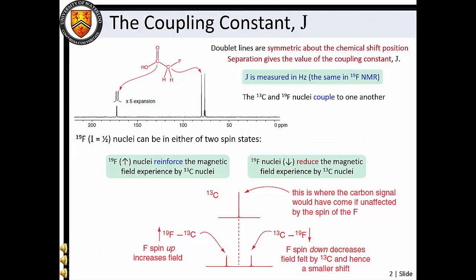If aligned with, the fluorine nucleus slightly reinforces the applied field, whereas the applied field is slightly reduced if the fluorine nuclear magnetic moment is aligned against. Carbon atoms in molecules with a spin-up fluorine therefore experience a slightly increased effective magnetic field, so their spin states are further separated and transition frequencies shift accordingly.